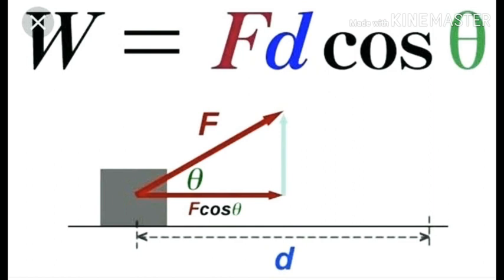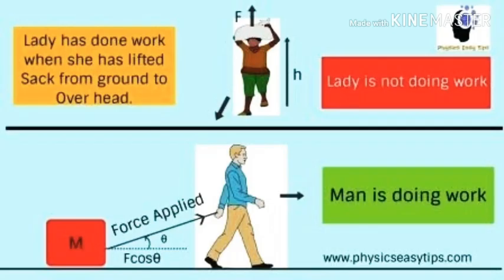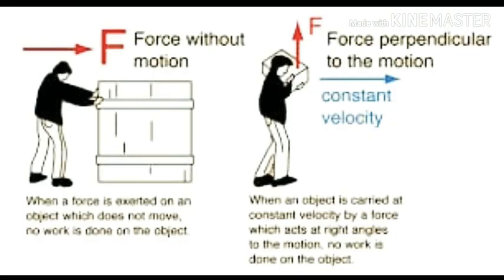But in real life situations, it is not necessary that the force always causes displacement in its own direction. There are many circumstances — for example, while playing football or cricket, we apply force in a particular direction and the ball is displaced in some other direction. In that case, how do you measure the work? What is the formula?